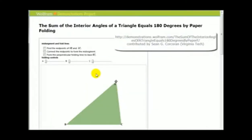So let's start with this green triangle and what we'll do is find the midpoints of sides AB and AC, plotted here. Then we'll connect the midpoints to form the midsegment.